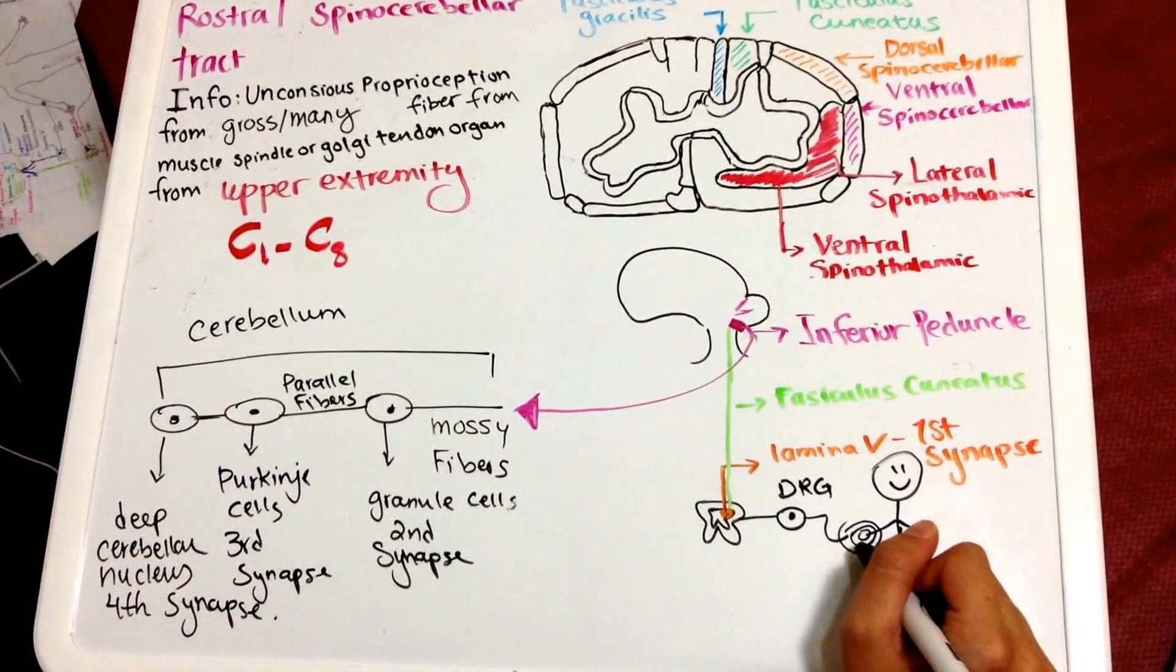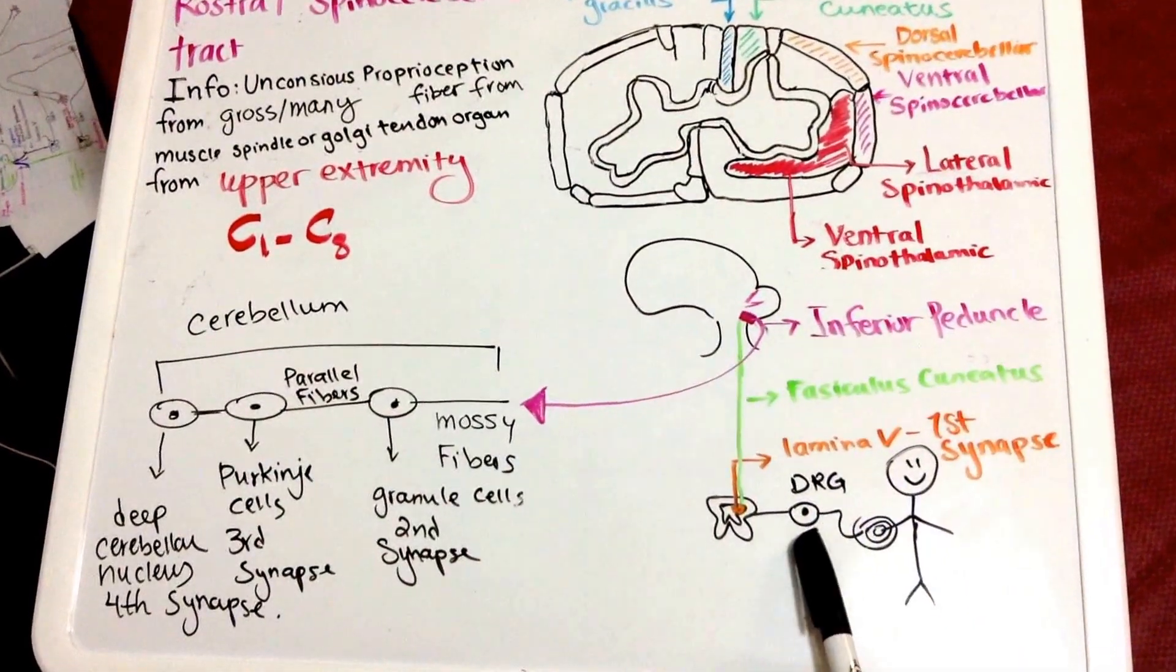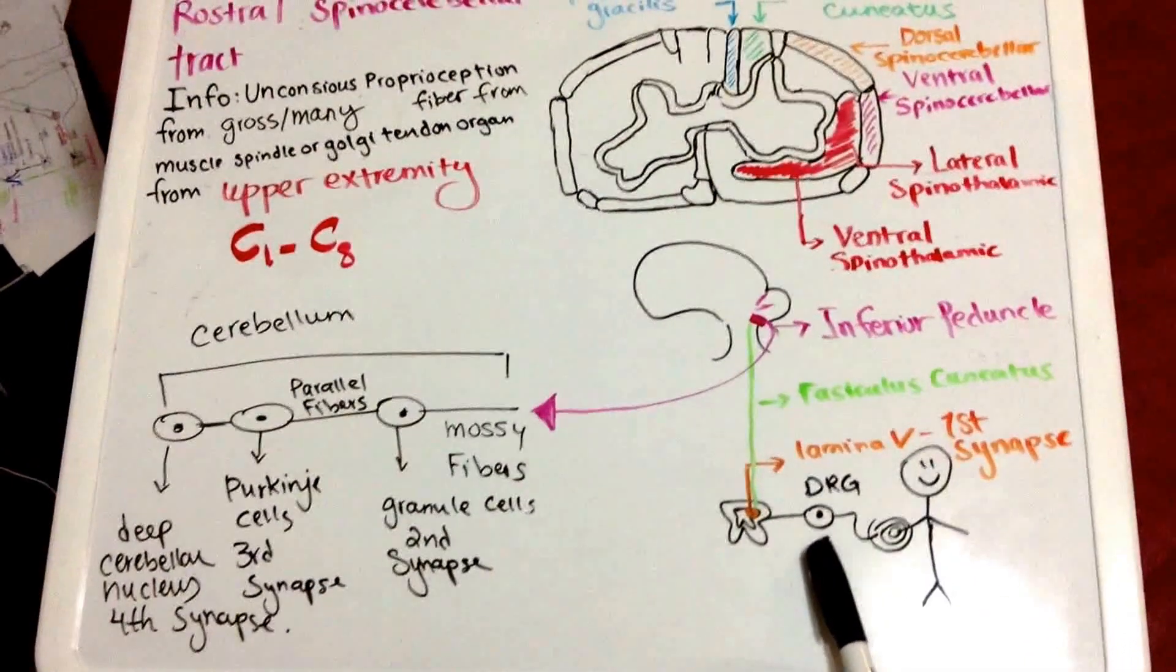The fibers will take the information to the dorsal root ganglion in which the cell bodies are located.